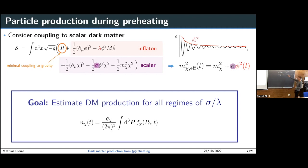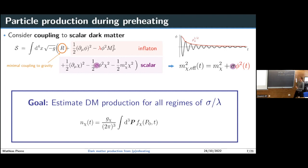I have a very simple setup with very few degrees of freedom — essentially two free parameters: lambda and sigma. I assume the bare dark matter mass is much lighter than the typical scales during production. I fix lambda at 10^{-11} to be consistent with Planck data, and I vary the coupling sigma to estimate the dark matter production across all possible coupling regimes.